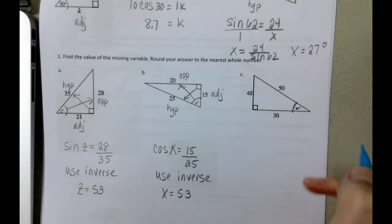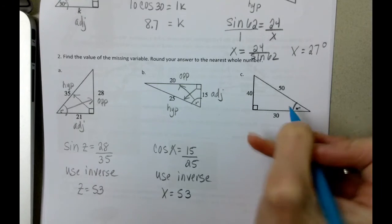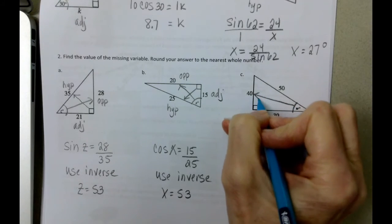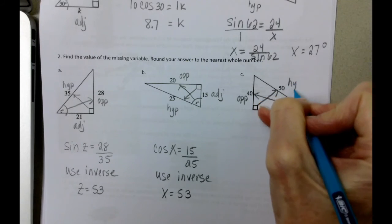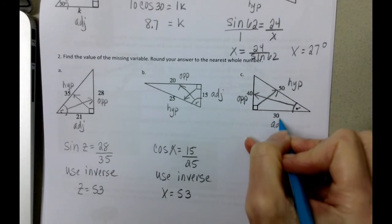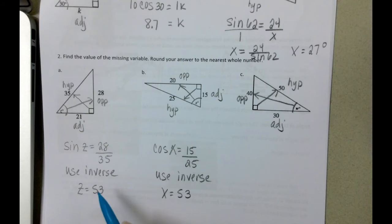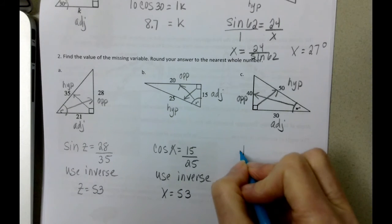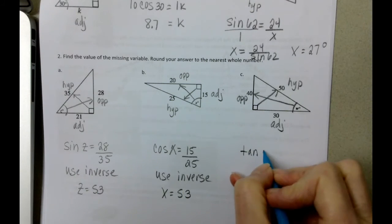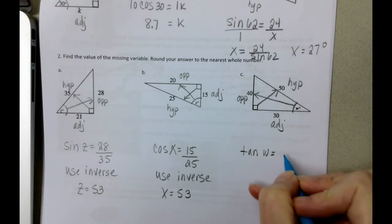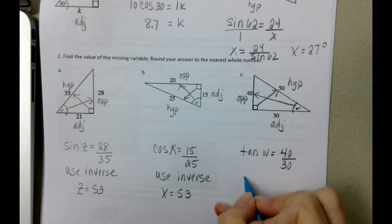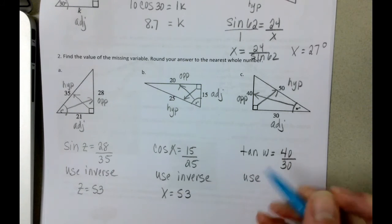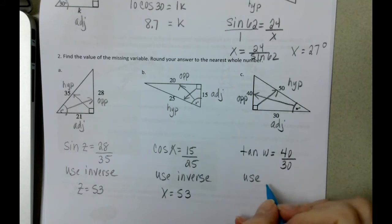Finding angle W over here. Labeling across from angle W is the opposite. Across from the right angle is the hypotenuse, which means that this is the adjacent. I've done sine. I've done cosine. So I'm going to look at tangent. Tangent of W equals the opposite length divided by the adjacent length. And when we're finding an angle, remember it's not a curve. We just need to use the inverse.